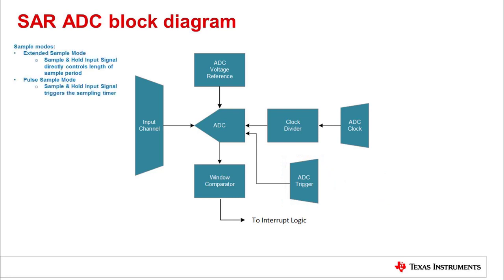The ADC supports extended sampling mode and pulse sample mode. In extended sampling mode, the sample and hold input signal, which is fed by the ADC trigger, directly controls the sample period and start of conversion. Sampling is active when the sample and hold input signal is asserted.